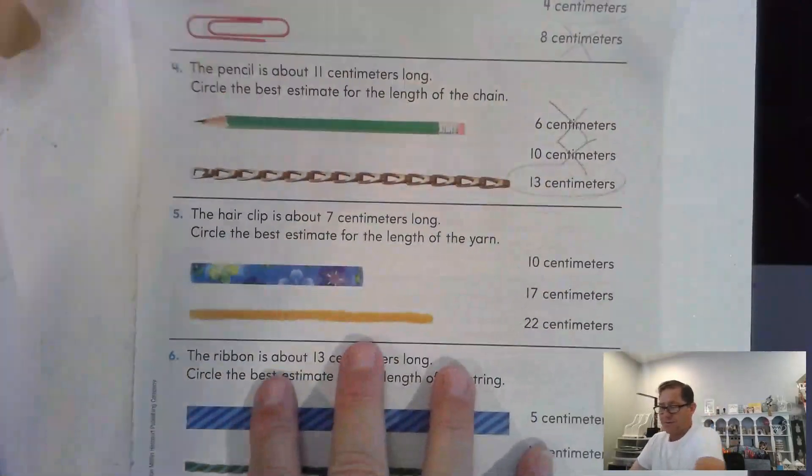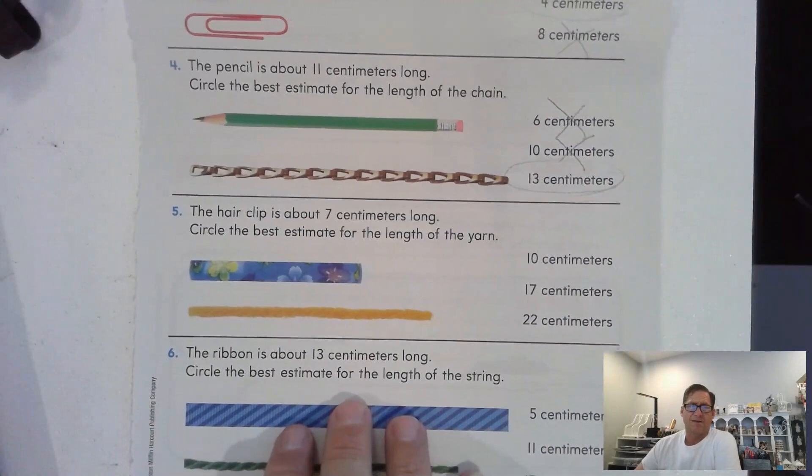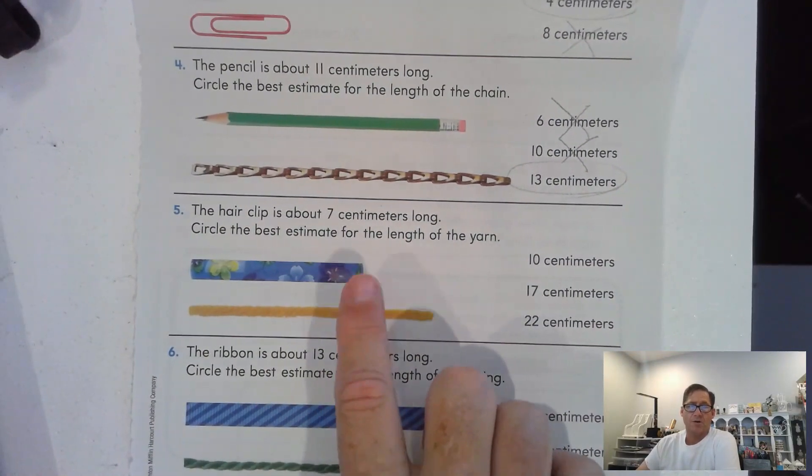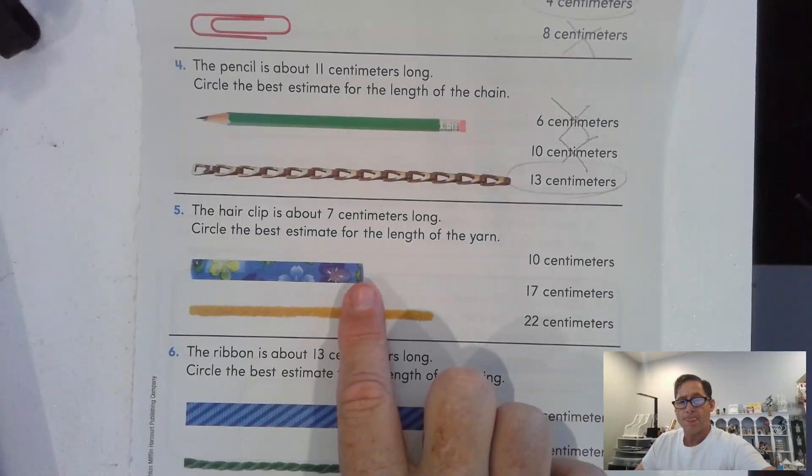The hairclip is about 7 centimeters long. Circle the best estimate for the length of the yarn. Okay, so the yarn is longer than 7. So, but how much bigger than 7?